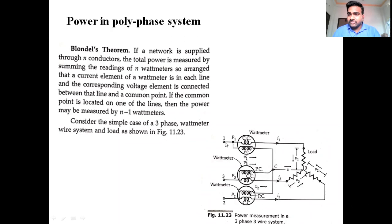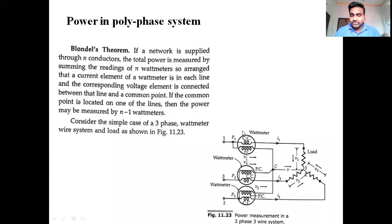We have three phases: R-phase, Y-phase, and B-phase. Three phases are connected with respect to three wattmeters. This is the circuit description of a wattmeter. Ammeter is represented with a capital A inside a circle. A wattmeter is represented with a current coil and a series coil connected with a resistance.